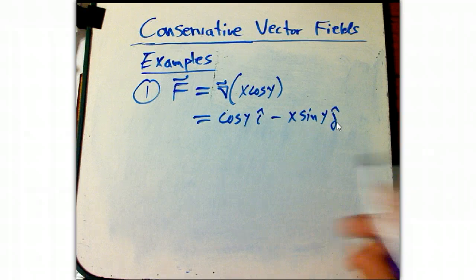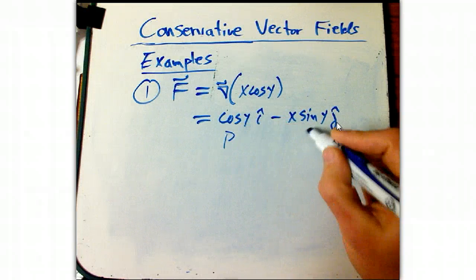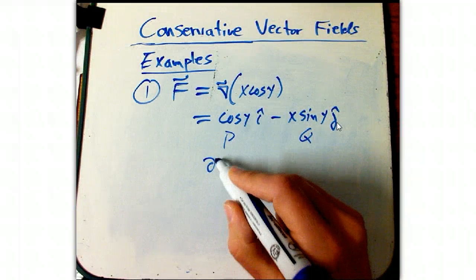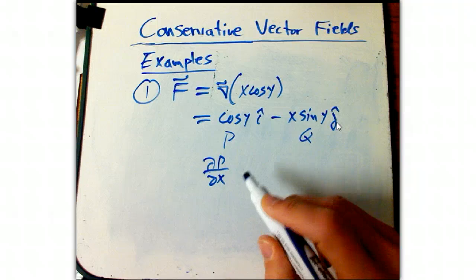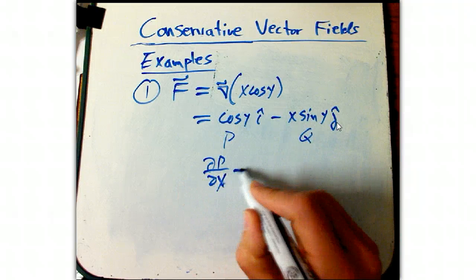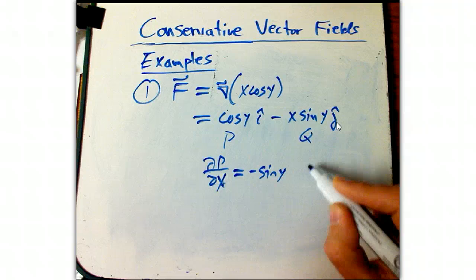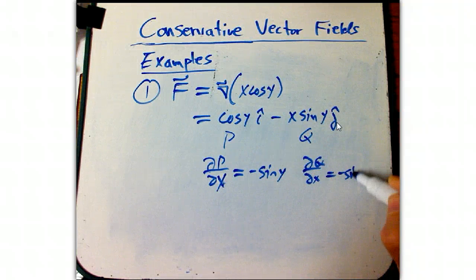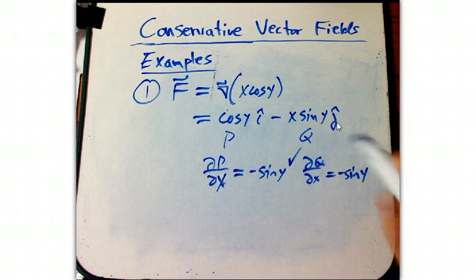So p is cosine y, q is minus x sine y. Let's check explicitly dP/dy, that is minus sine y. And dQ/dx is minus sine y. They had better have been equal, they are.